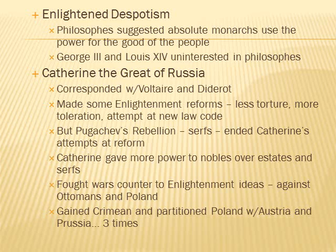Enlightened despotism: philosophers suggested absolute monarchs use their power for the good of the people. George III and Louis XVI were not so interested. Catherine the Great of Russia played at being an enlightened despot — she corresponded with Voltaire and Diderot, made some enlightened reforms including less torture, more toleration, and attempted a new law code. But the nobility ended that attempt. She changed her mind about enlightened despotism because of Pugachev's Rebellion, a serf rebellion that ended her attempts at reform. She gave more power to nobles over their estates and serfs to prevent future rebellion.